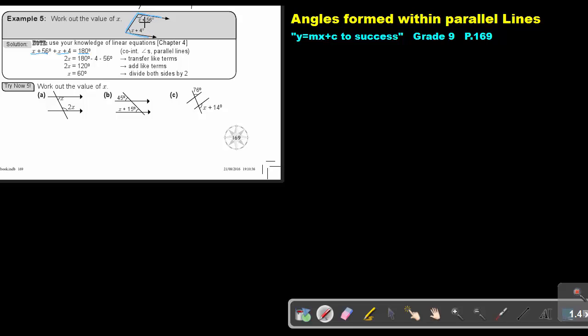Now what does it mean? If I substitute 60 in there, then 60 + 56 = 116, and 60 + 4 = 64. If I add those up, I will get exactly 180 degrees.